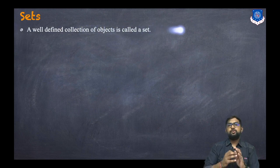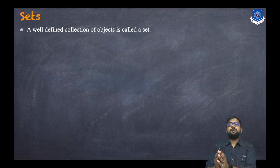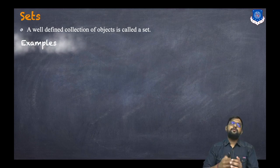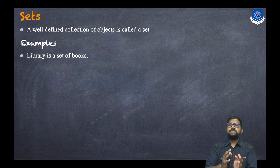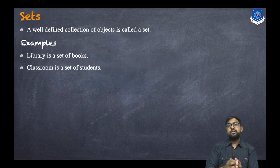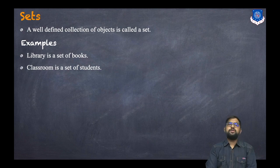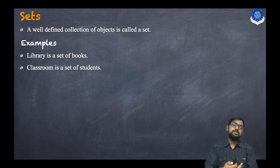First, let's understand what is a set. A set is a well-defined collection of objects. Objects can be anything. For example, a library is a set of books. A classroom is a set of students, or it can be a set of chairs, and so on.